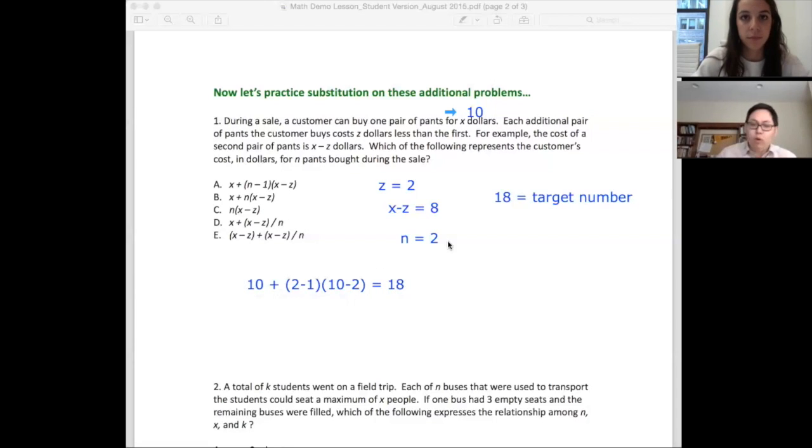What you want to do is make sure you don't choose the same kind of number for variables, so it doesn't confuse you. One thing as well is that you want to make sure you are consistent with your numbers. If you chose x = 10, make sure that x is always 10.